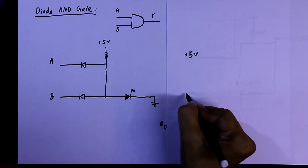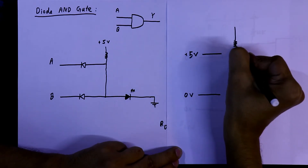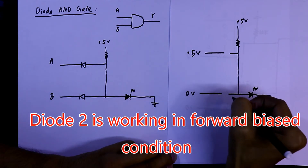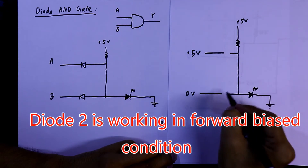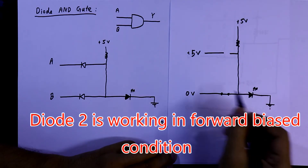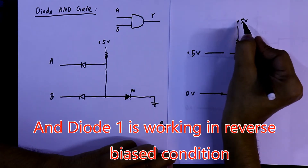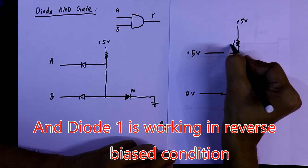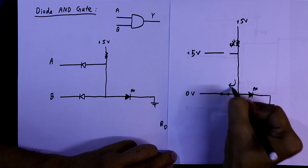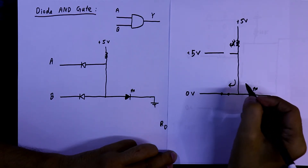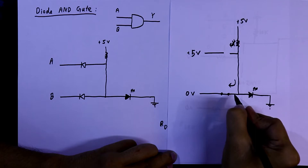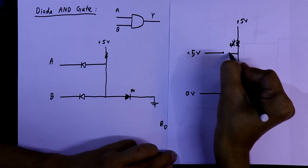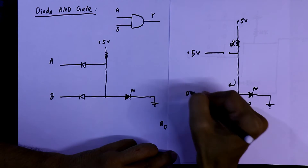For the second condition, A=1 means plus 5 volts and B=0 means zero volts. Since zero is at the cathode of diode B and positive is at the anode, diode B is working as a closed circuit. The potential difference across diode A is zero, so current will not flow through it. Current flows through the low-resistance path via the closed diode, and since the LED has higher resistance, the output is zero for A=1, B=0.